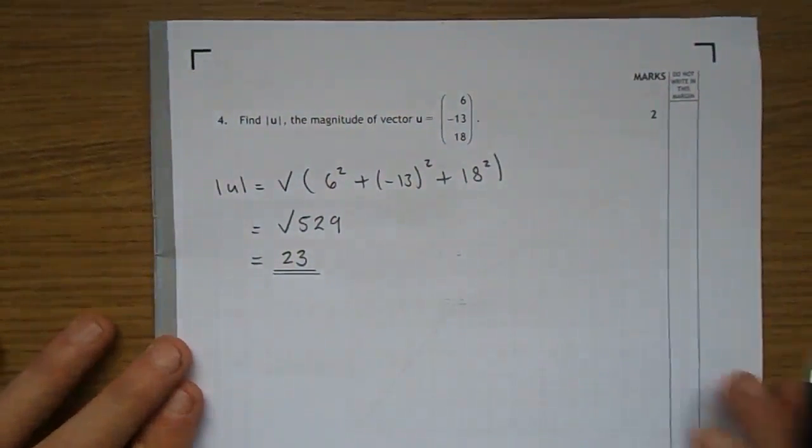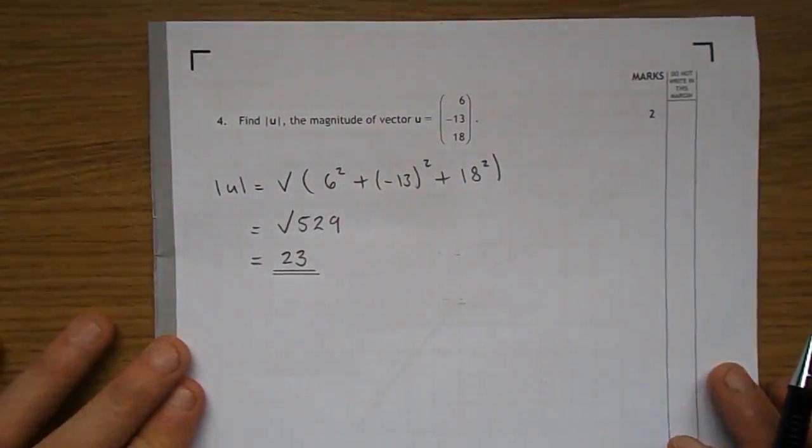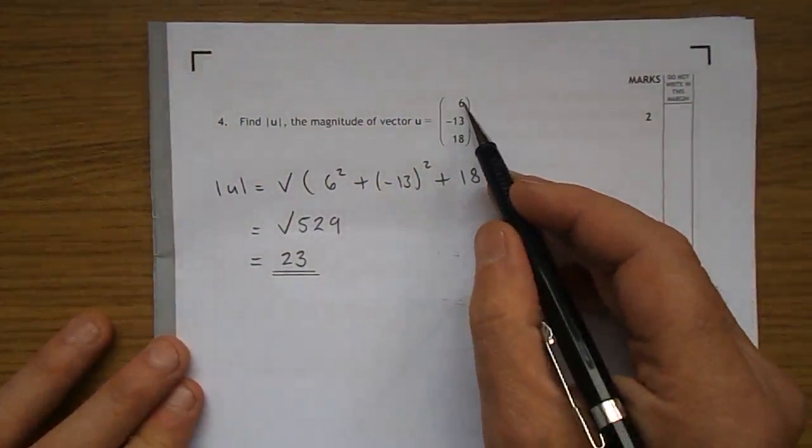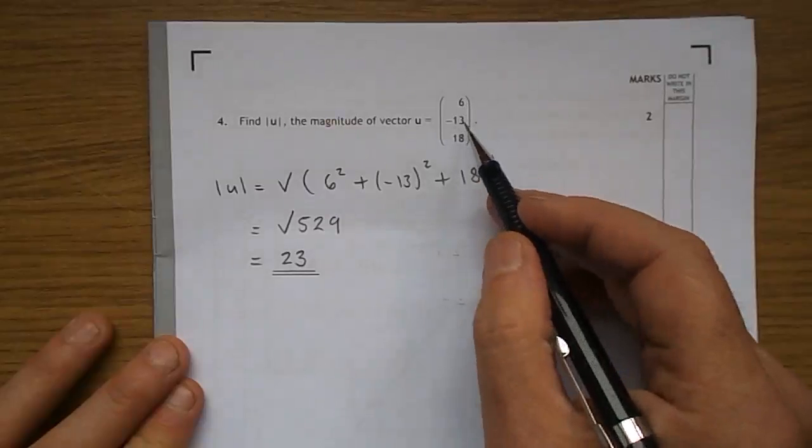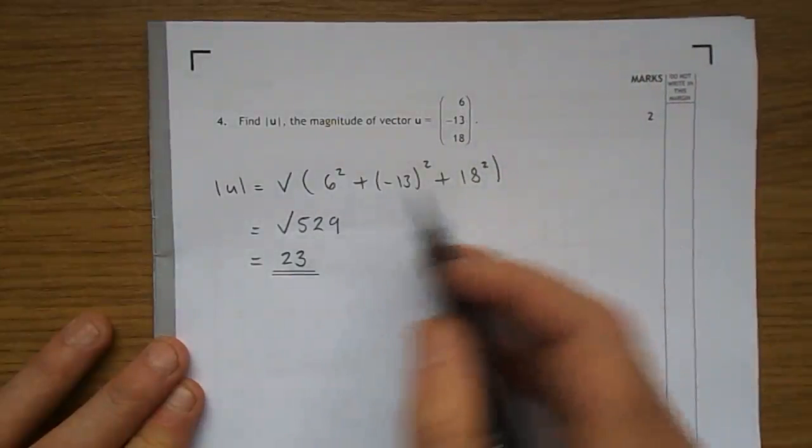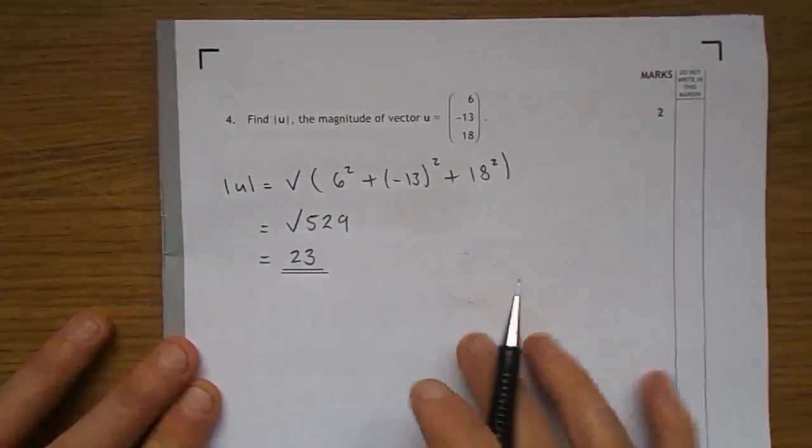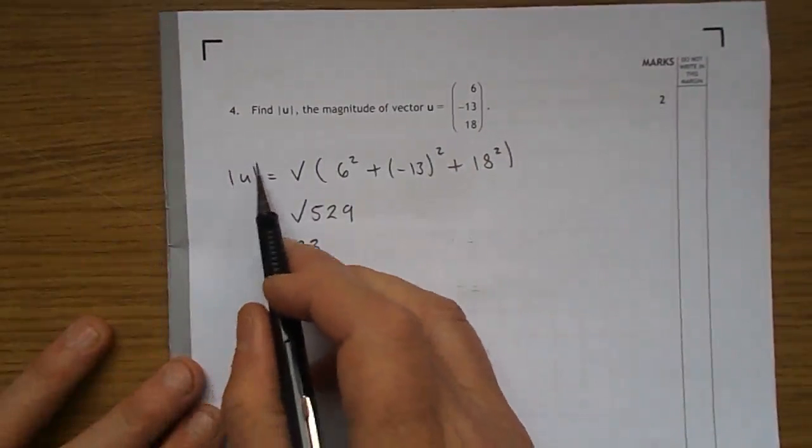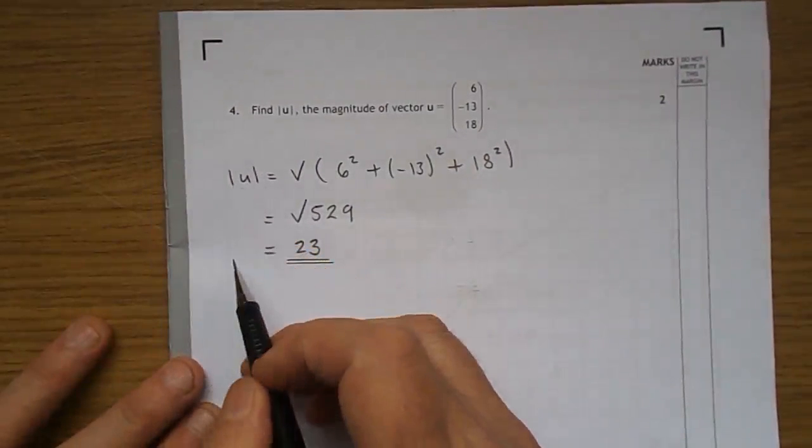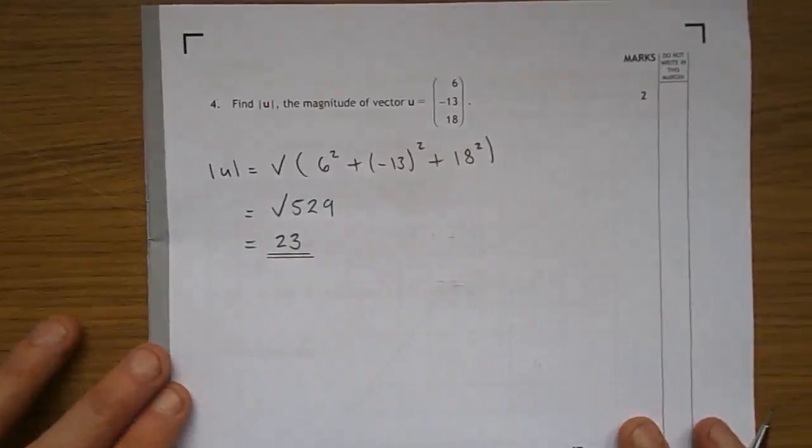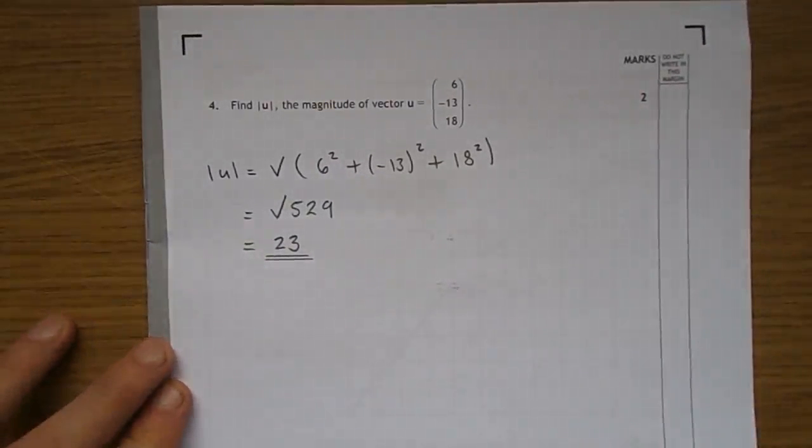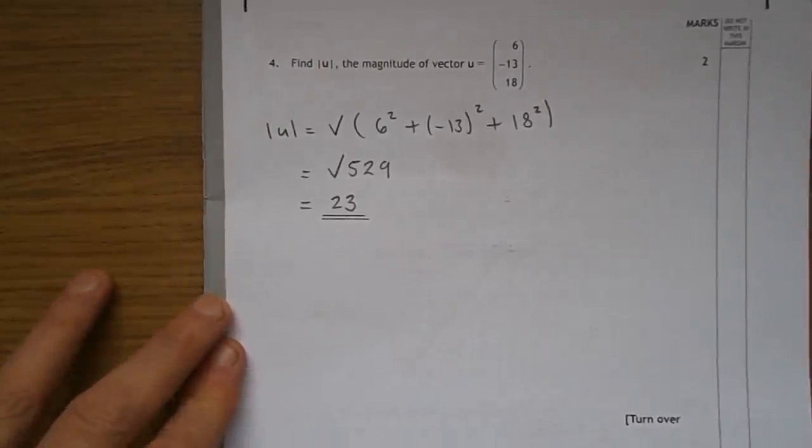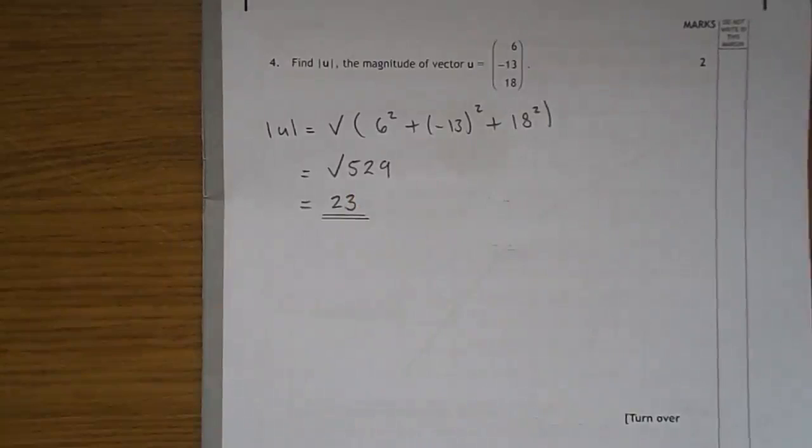Getting the magnitude, or length, of a vector. To get the length of a vector, you take each term, you square them, then you add them, and then you root your final answer. So, the length of u is the square root of 6 squared, plus minus 13 squared, plus 18 squared. This is nothing for your calculator. Square root of 529 gives you 23.